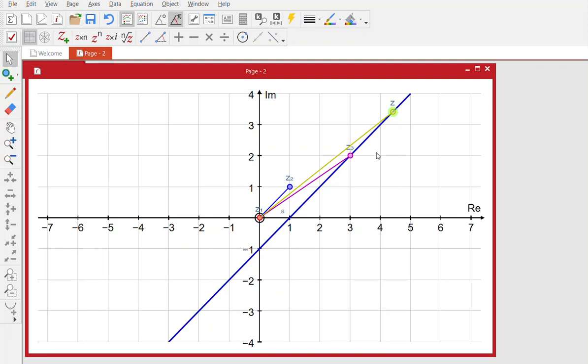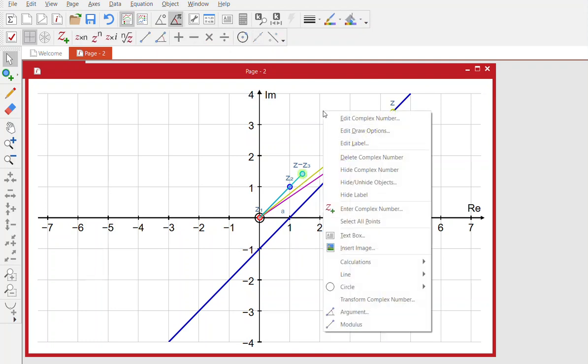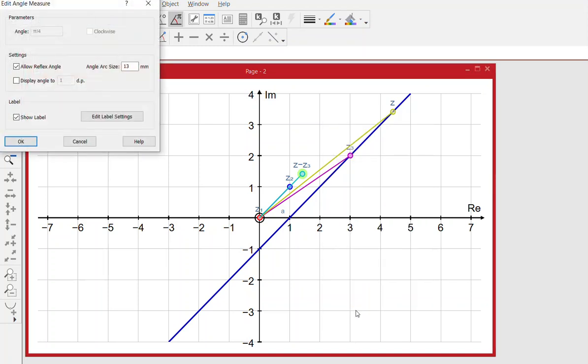Right, now we need to have a look at the argument of z minus z3. So if I select those z, z3, and then I subtract those. I've now got this new complex number z minus z3, and I'm going to put on the argument of z minus z3. So if I right click and put on the argument.